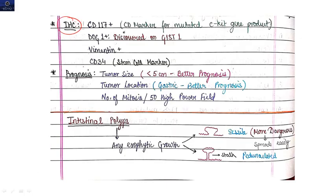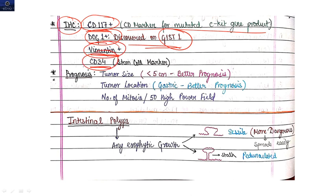Now when you will do IHC, immunohistochemistry, then it will be CD117 positive because this is the CD marker for mutated c-KIT gene product. DOG1 positive, which is discovered on GIST-1, vimentin positive, and CD34 positive. This is a special MCQ question which may be asked in your examination: CD117 positive, DOG1 positive, vimentin positive, and CD34 positive.